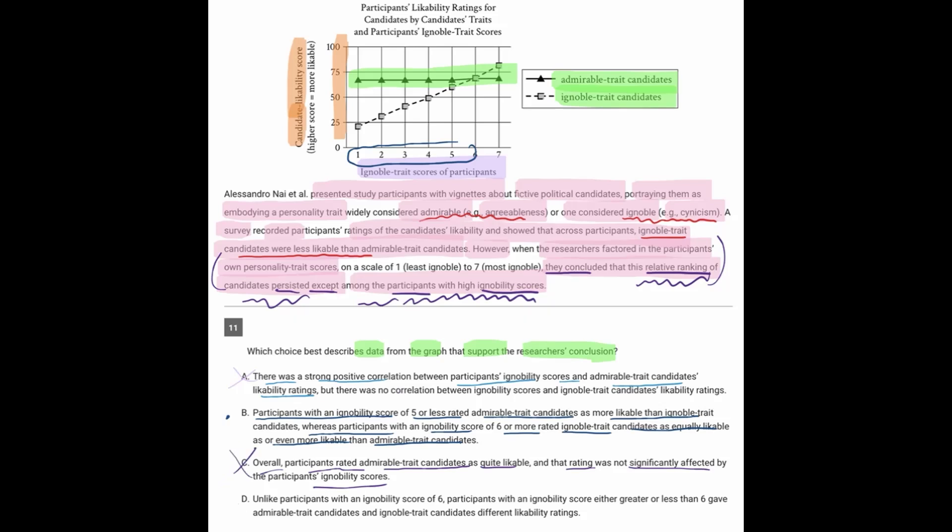So now going to D, unlike participants with an ignoability score of 6, participants with an ignoability score either greater or less than 6 gave admirable candidates and ignoble candidates different likability ratings. Well, here's another one that is true because at 6, they had the same score, but less than 6 or greater than 6 of participant ignoability, there were different scores. But this also doesn't address the conclusion. The conclusion said the idea that across participants, ignoble candidates were less likable. So that relative ranking persisted except among the high ignoability. So we need to see the admirable candidates as higher throughout. And then that relationship changing. D merely says they're equal in one part and they're different in one part, but it never says which one is higher.